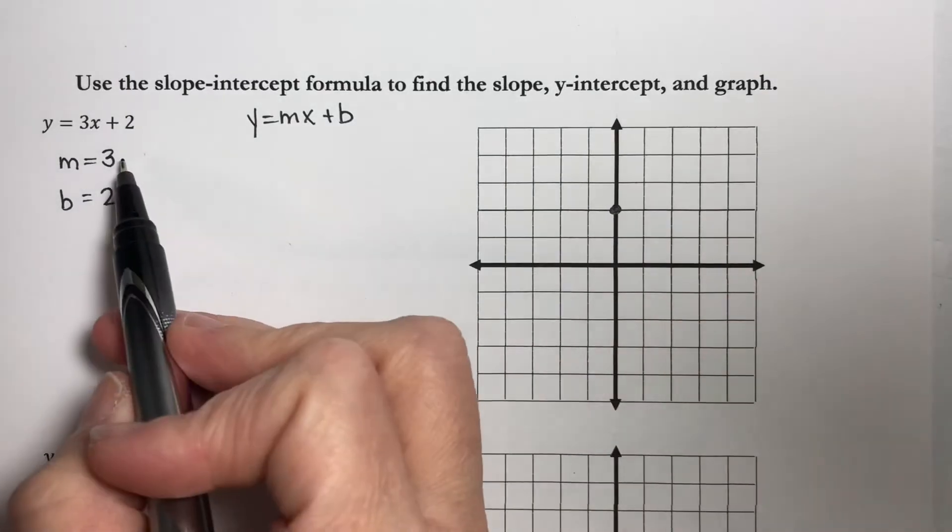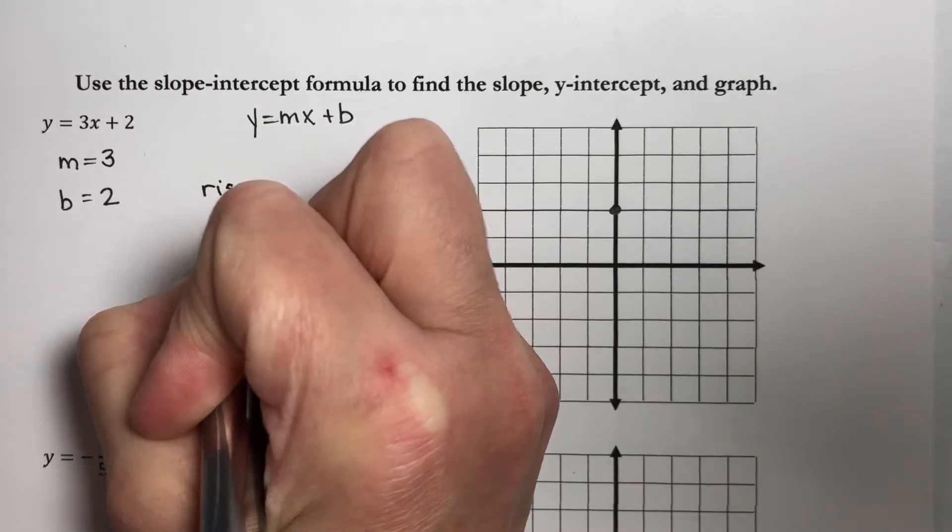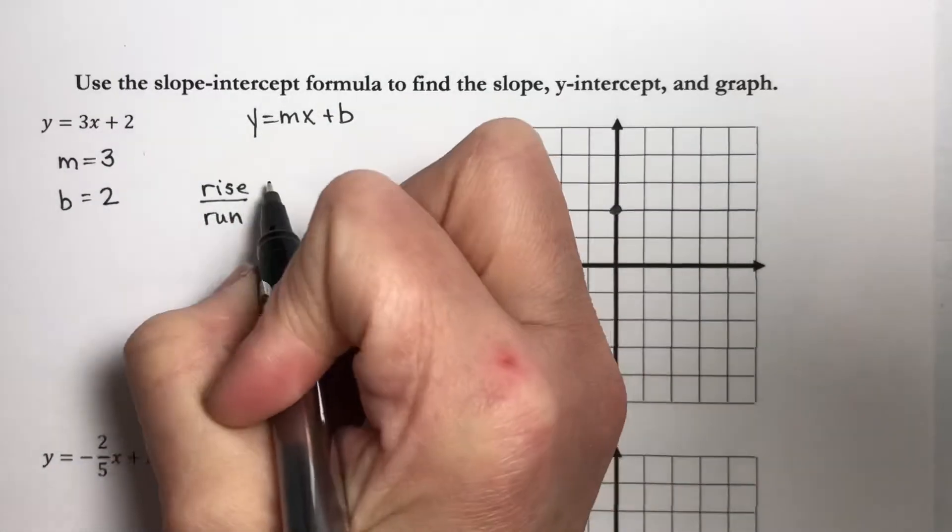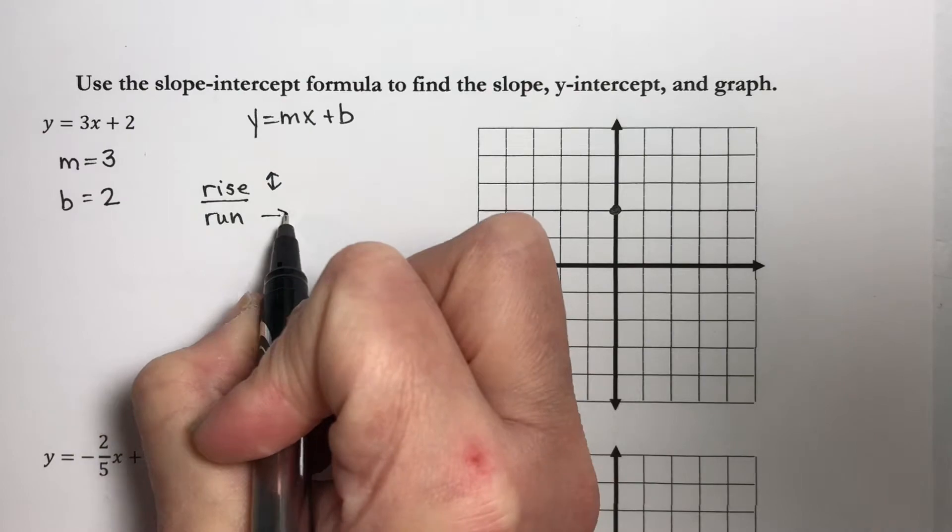Now my slope is 3. Remember one definition of slope was rise over run. Rise is your up-down movement, and run is your left-right movement.